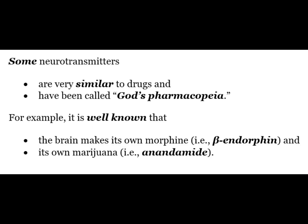Sometimes neurotransmitters are very similar to drugs and have been called God's pharmacopoeia. For example, it is well known that the brain makes its own morphine, i.e. beta endorphins, and its own marijuana, i.e. anandamide.